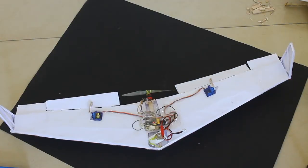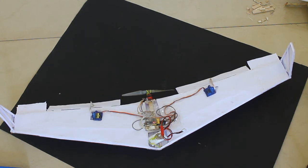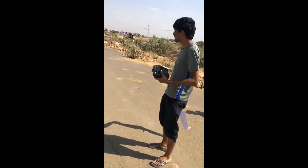Now connect all electronics and set the CG. The exact value of center of gravity can be calculated using any wing CG calculator that are available online. Finally, it's time to fly.